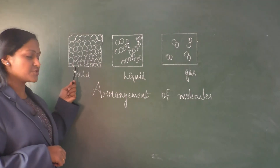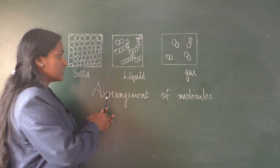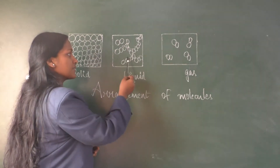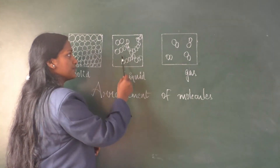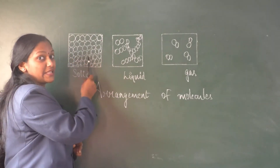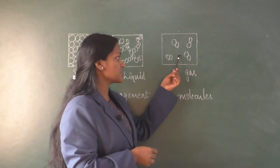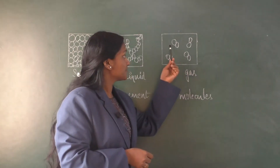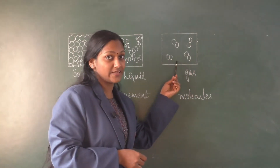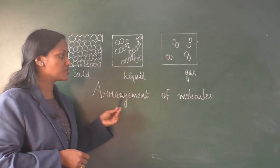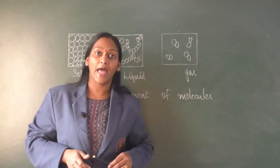This is the arrangement of molecules in a solid — the particles are tightly packed with no space in between. In a liquid, there is more space between the molecules. In a gas, there are many empty spaces between the particles. These are the arrangements of molecules in solid, liquid, and gas.